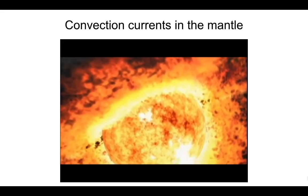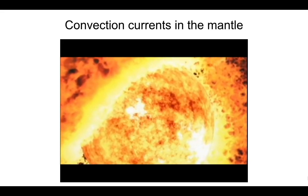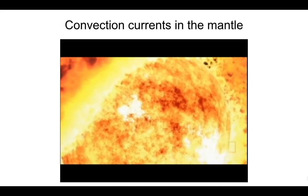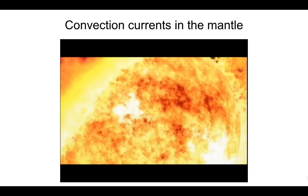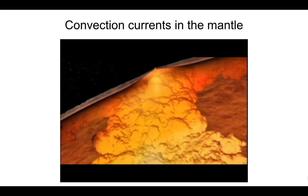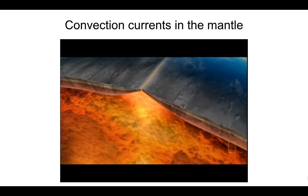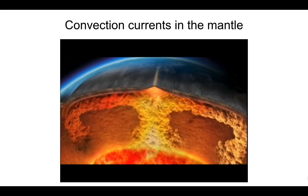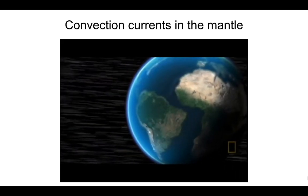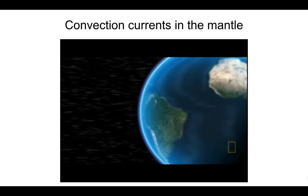The huge molten core contributes something else essential for life on Earth — a way of helping to regulate the planet's temperature. It's a remarkable system. Magma, heated by the core, rises towards the Earth's surface. As it spreads sideways, the Earth's crust is very slowly dragged apart. This moves the continents, creating the Earth's restless and ever-changing surface.